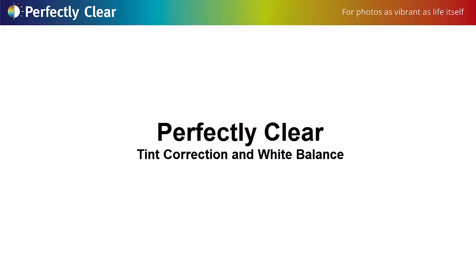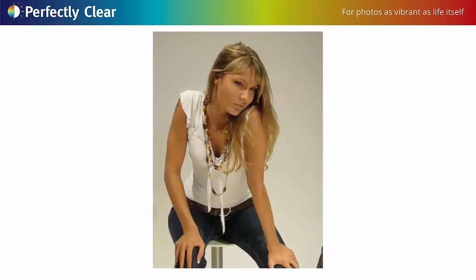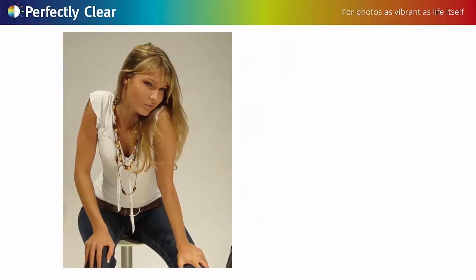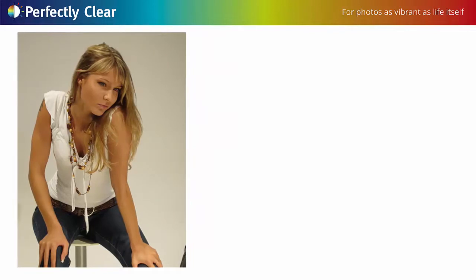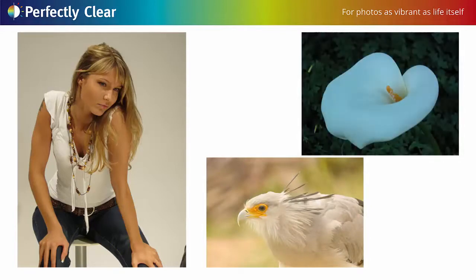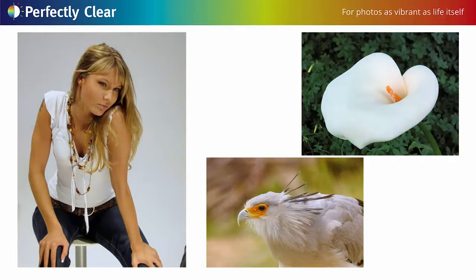With all the high-tech science in today's digital cameras, how is it you still sometimes get these nasty abnormal tints? How come the colors in your photos aren't true to what you see when you were taking the image? Your eye sees and your memory captures the perfect moment, but when you look at the image, it turns out blue, green, red, sometimes yellow. This abnormal tint looks terrible. So what happened? How do we get here, how it really looked?